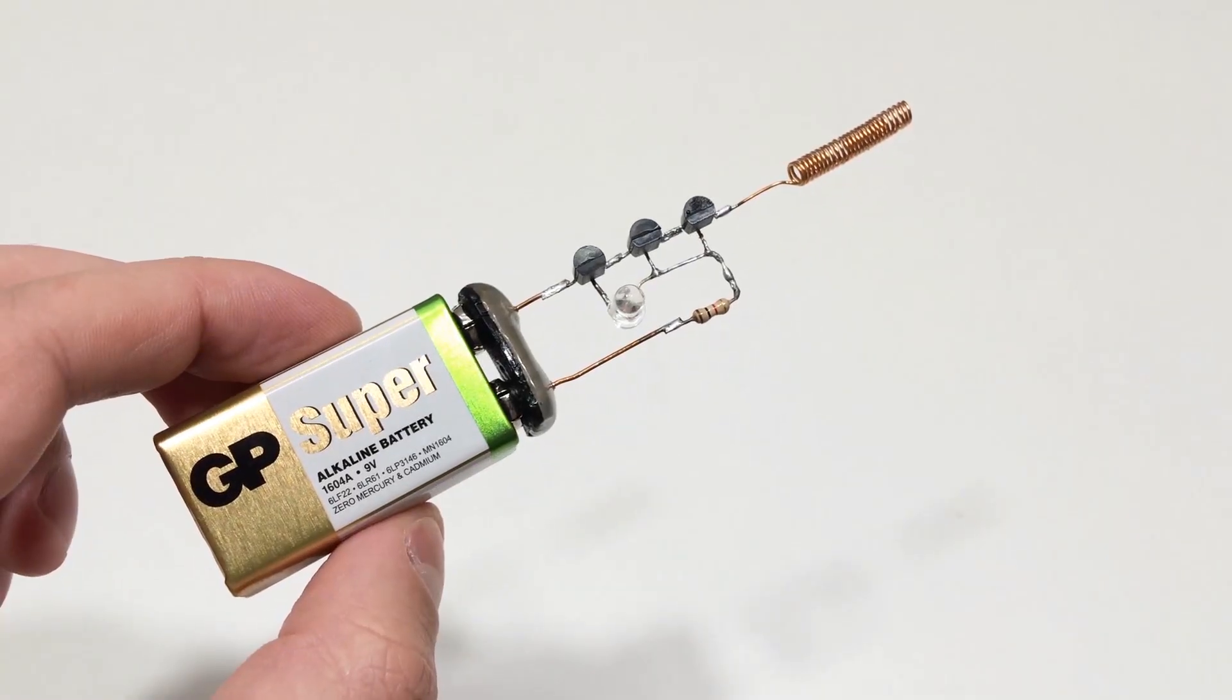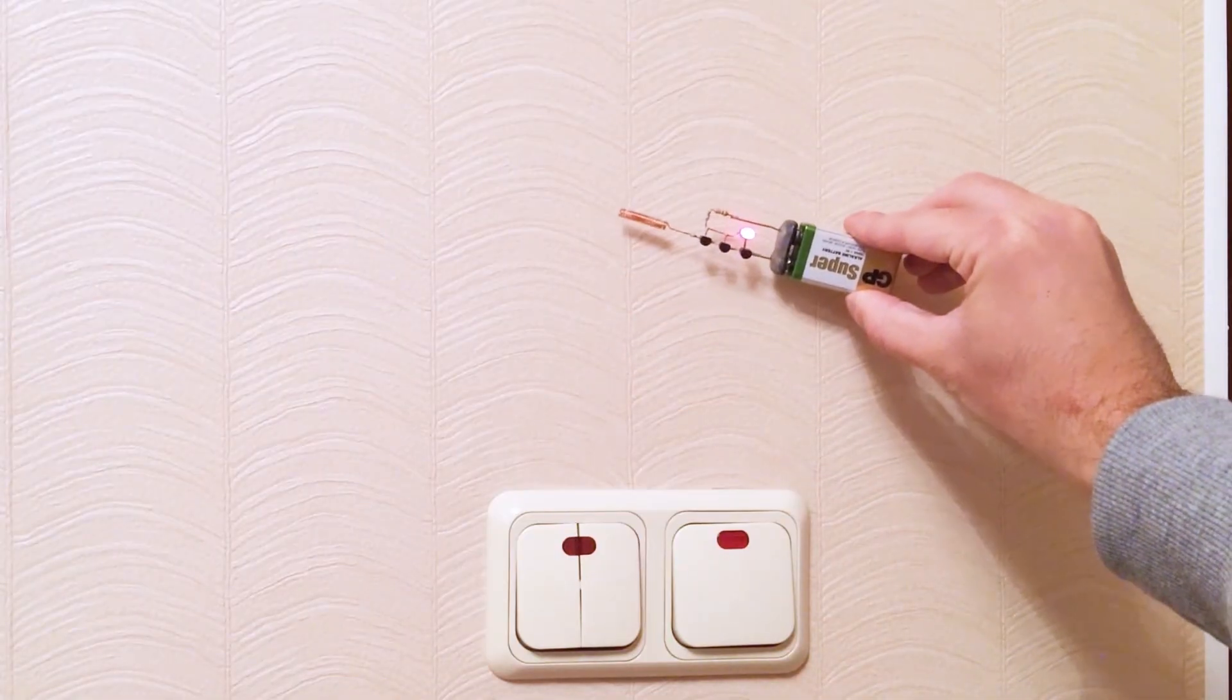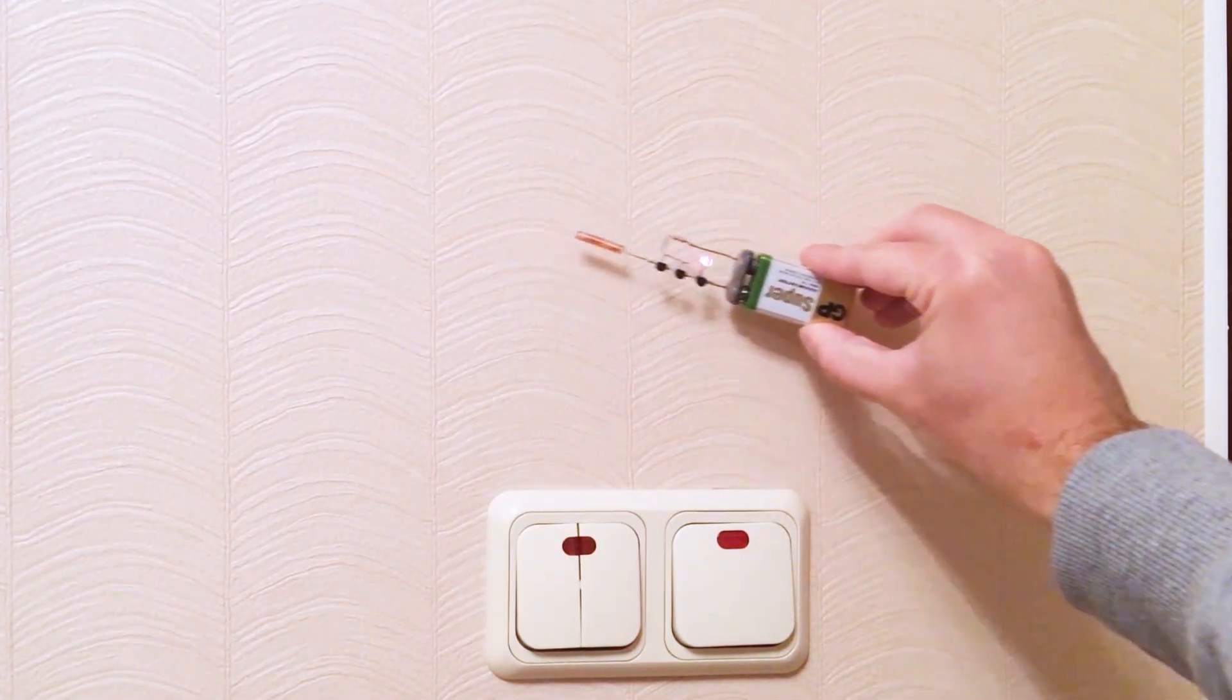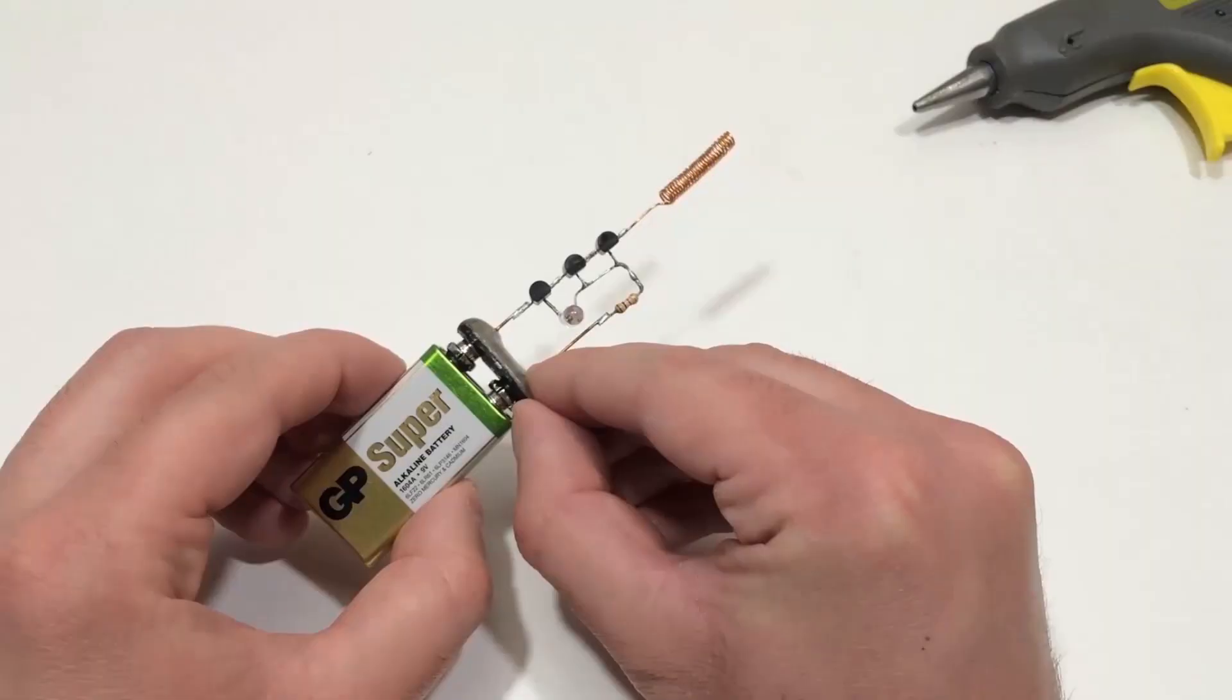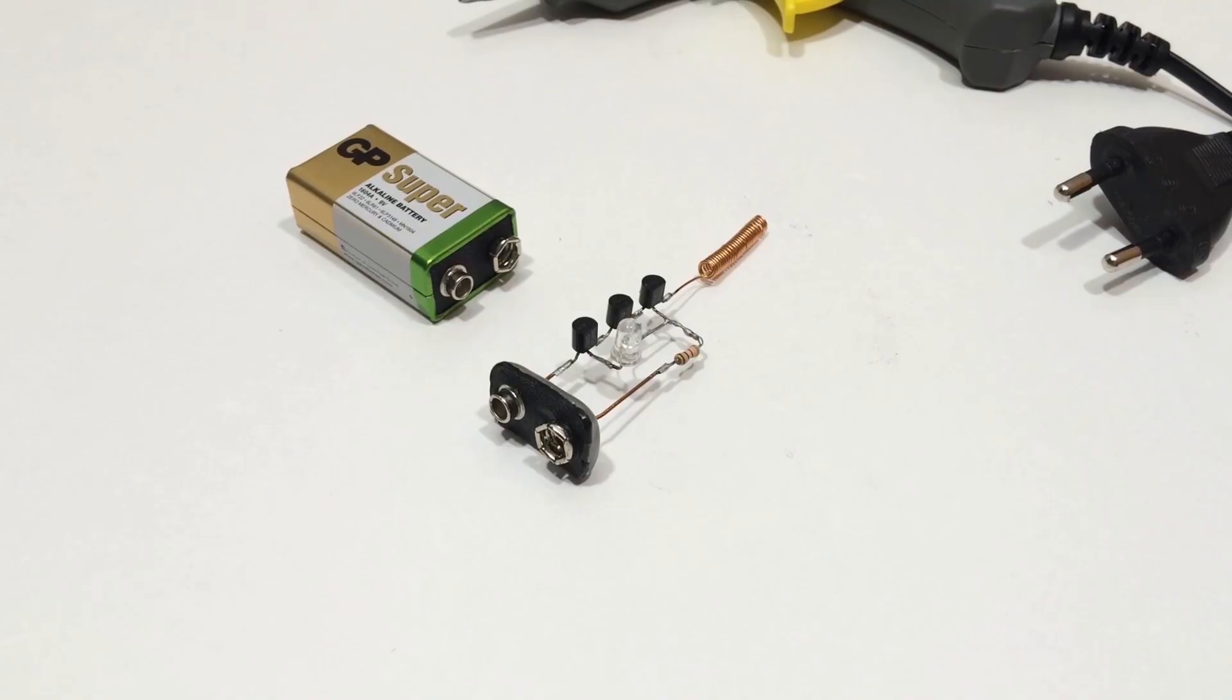And that's it. A simple homemade contactless hidden wiring and metal detector built from just a few everyday components. A great DIY project and a useful tool for your workshop. Thanks for watching, and I'll see you in the next project.